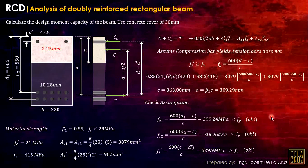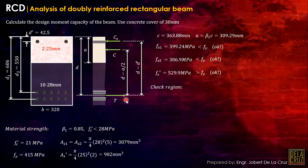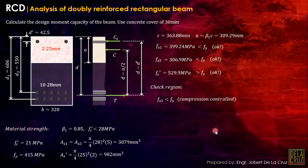Now check the region. Since we have two stresses for D1 and D2, we base the region check on the farthest distance from the neutral axis — which is the extreme tension row, so we use Fs1. Fs1 here did not exceed Fy, which means this section is compression-controlled. For compression-controlled, the reduction factor φ = 0.65.